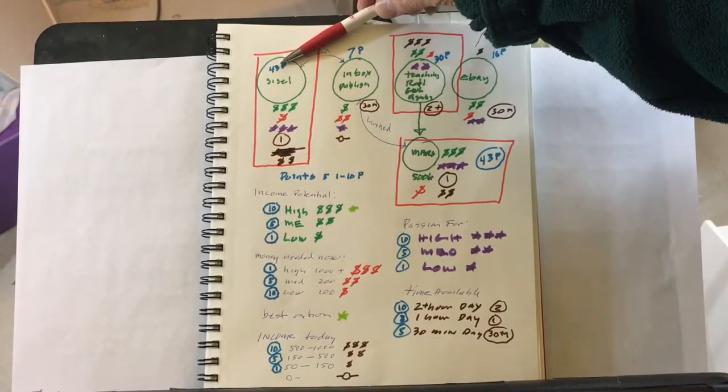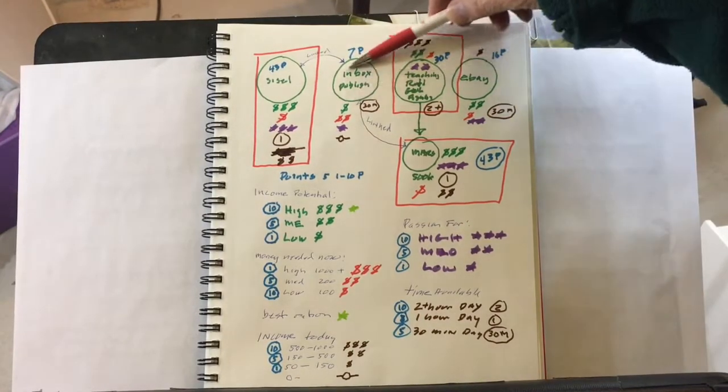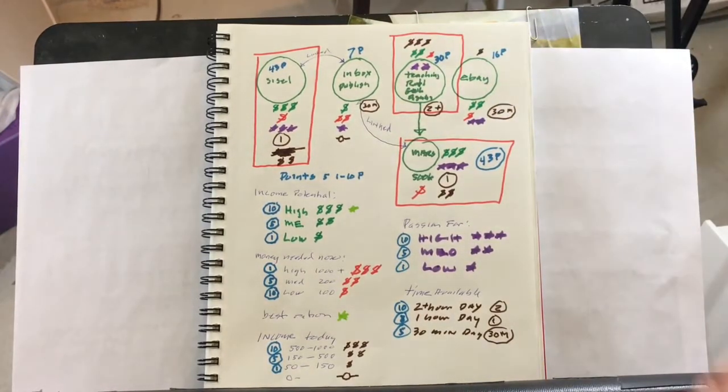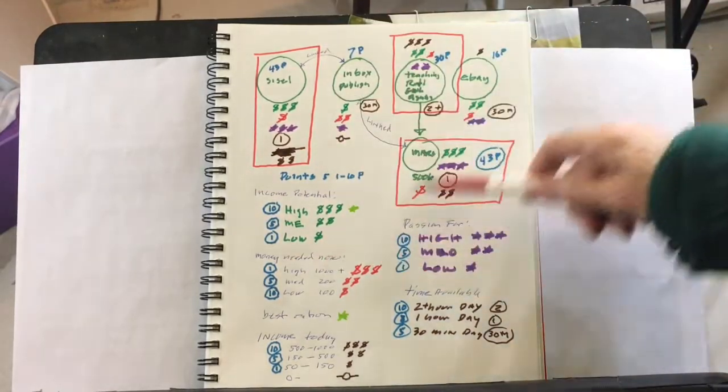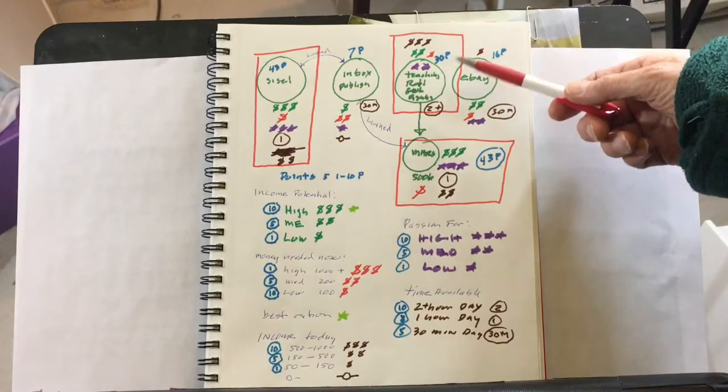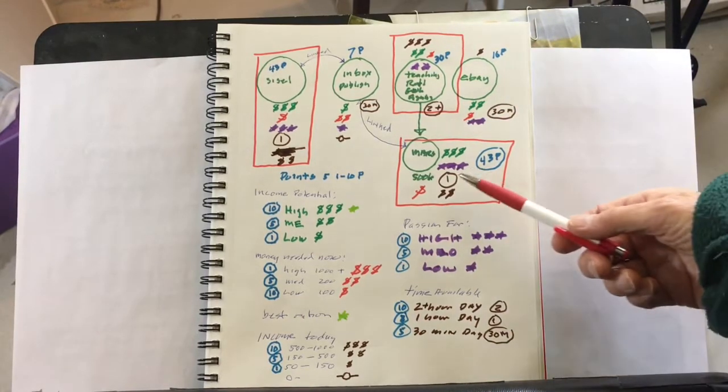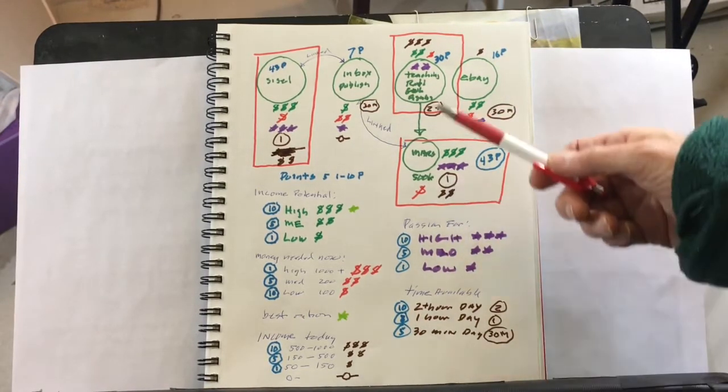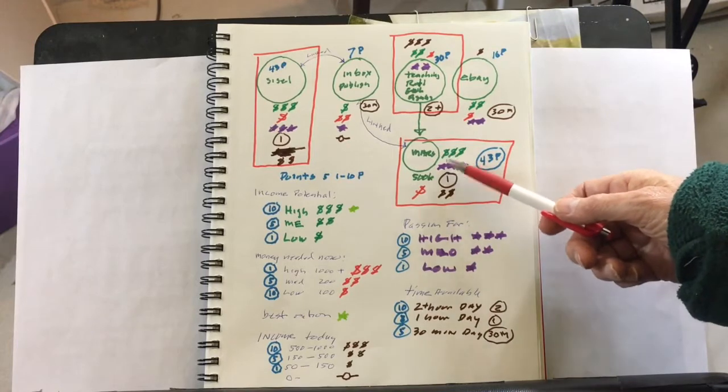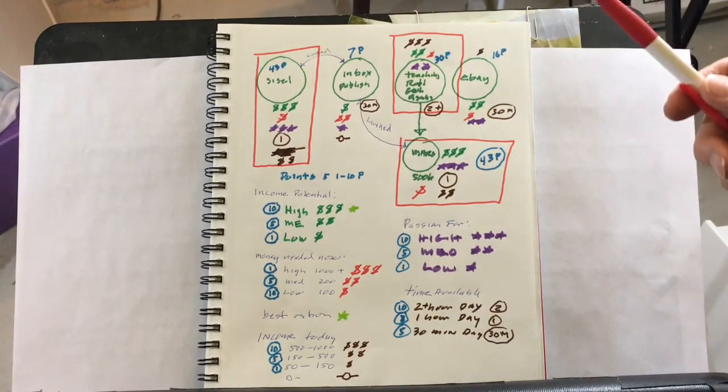So in my network marketing longevity business, I get 43 points. In my digital publishing business, I only got 7 points. It's a great tool for promoting these other businesses, but to work on it day to day only has 7 points. My live teaching gets 30 points. Really good. My eBay business only got 16 points. And my long-range teaching kids about Mars,